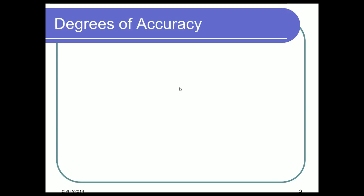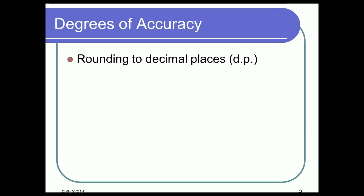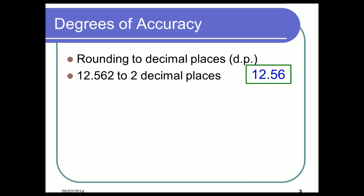Okay so degrees of accuracy — there are two different ways I'm going to show you. The first one is rounding to decimal places, sometimes written as DP. If I give you the example 12.562 to two decimal places, it would give me the answer 12.56. Now why? Well, two decimal places means you go to your decimal point and count two numbers after it — that's all the numbers we want in our answer. So anything to the right of that is superfluous.